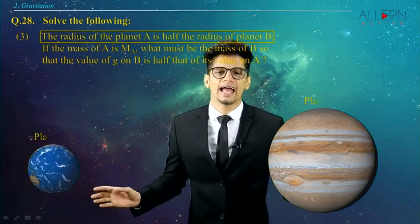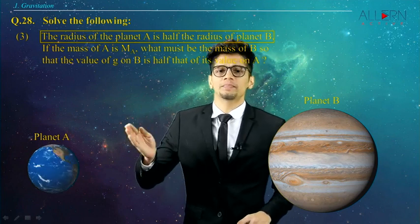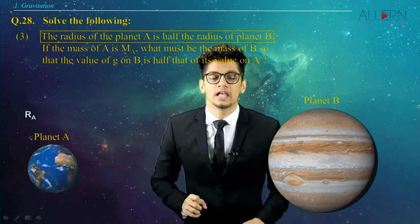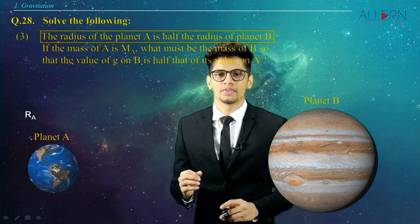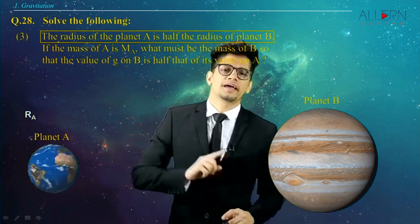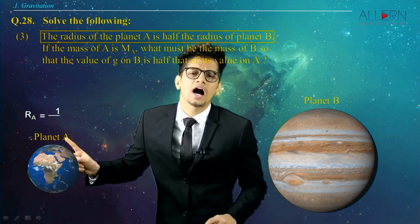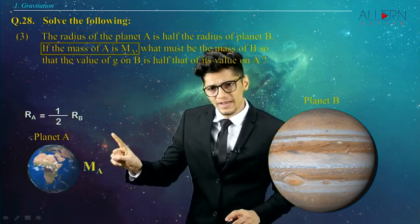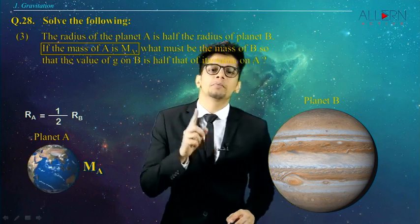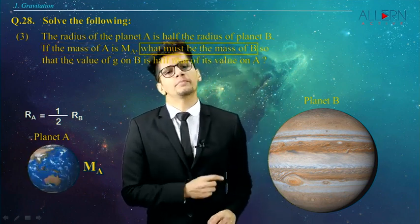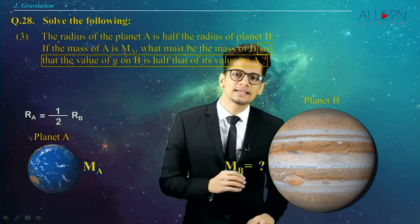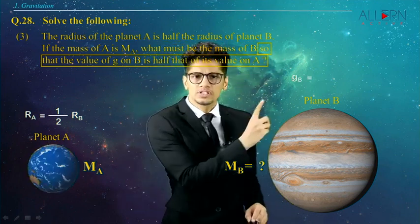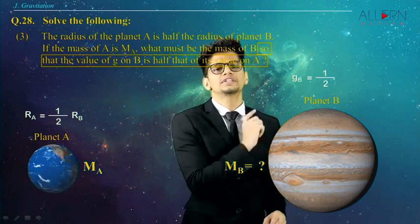Here we have two planets, planet A and planet B. The radius of planet A is half the radius of planet B. So R_A is equal to half of R_B. Mass of planet A is M_A, and we need to find the mass of planet B, M_B. Also, the value of G on planet B, that is G_B, is half the value of that on A. So G_B is equal to half of G_A.